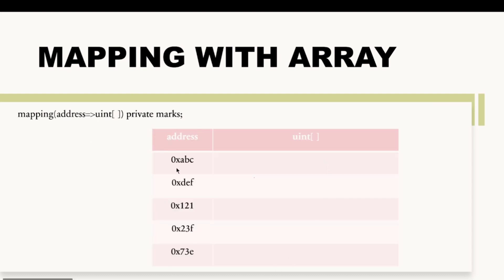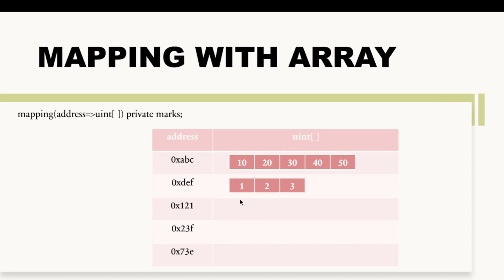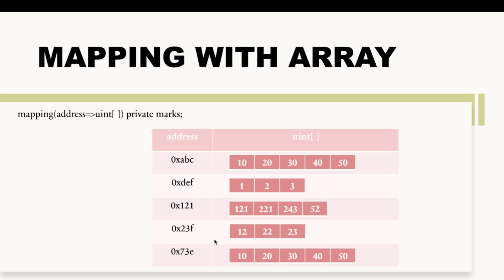Let's see how values are stored inside this mapping. We have several addresses, each storing their own marks. For example, address 'abc' stores the array 10, 20, 30, 40, 50 — these are abc's marks. Address 'def' stores 1, 2, 3. Since this is a dynamic array, it's an uneven structure. One student may have scored in physics, chemistry, maths, and English — hence 10, 20, 30, 40, 50.